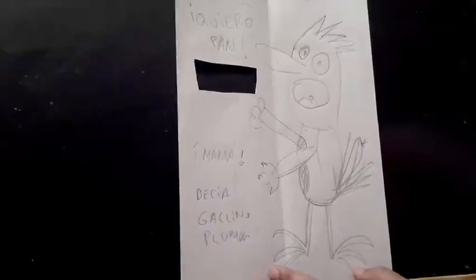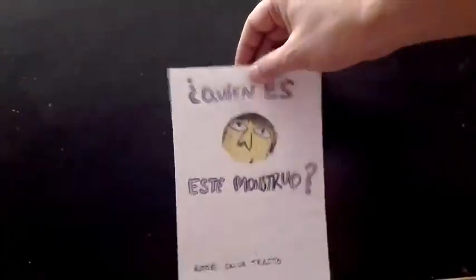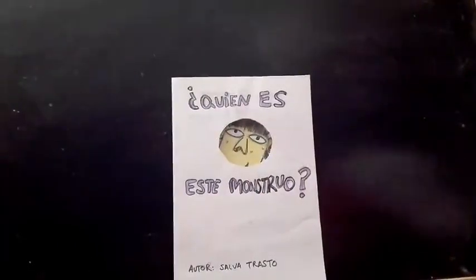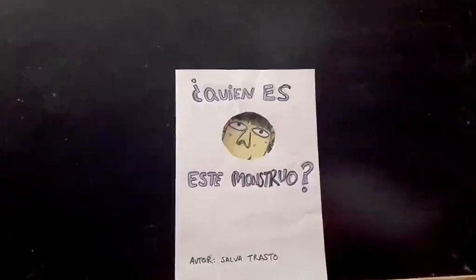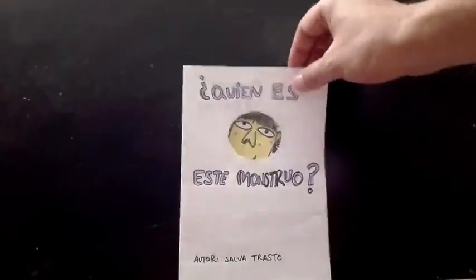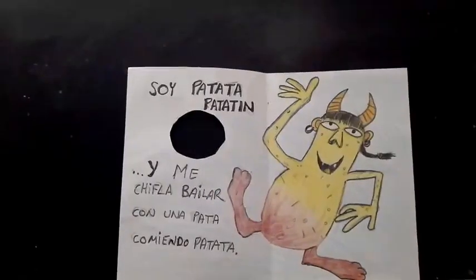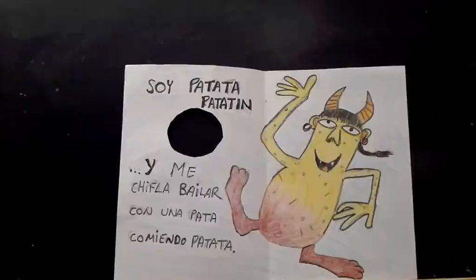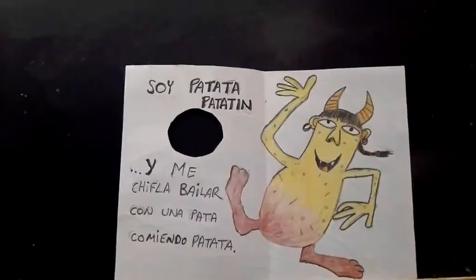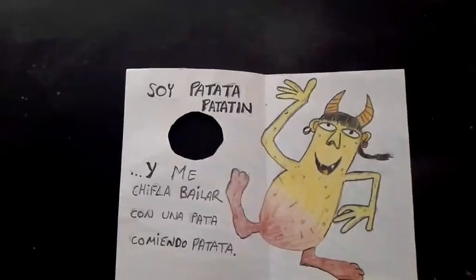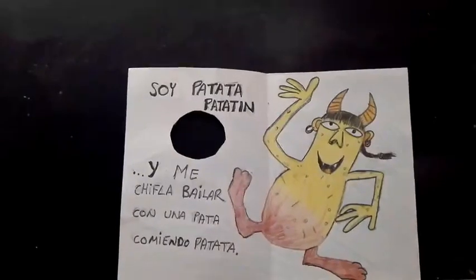«Papá, os quiero pan, mamá», decía Gallino Plumón. Y entonces aquí pues esto se puede completar como queráis. Este otro que hemos hecho: '¿Quién es este monstruo?' Se ve ahí una cabeza. ¿Os lo imagináis? Pues fijaros, abrimos... Patata, patata. Este se llama Patata Patatín. Y dice: '¿Quién es este monstruo? Soy Patata Patatín y me chifla bailar con una pata comiendo patata.' Esto de ponerle también un pareado.